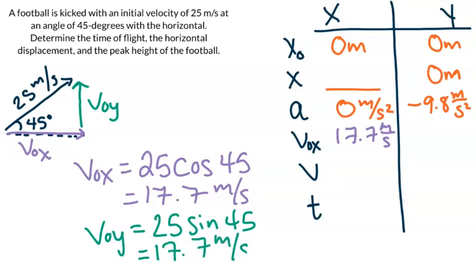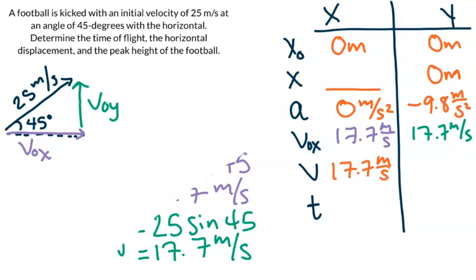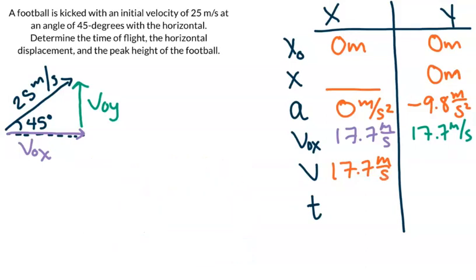When we look at cosine and sine of 45 degrees we're going to end up with the same values, so we can go ahead and plug that in as well. That's not going to be the case for all angles — we just happen to pick a nice one. From here we can also fill in that our final x velocity is going to be 17.7 meters per second as well, because we have an acceleration of zero, which means our velocity is going to be constant.